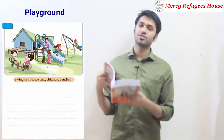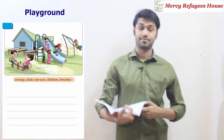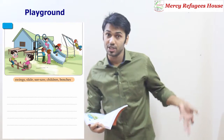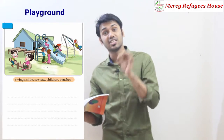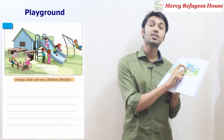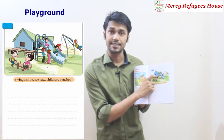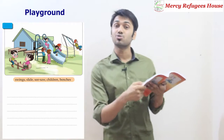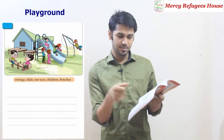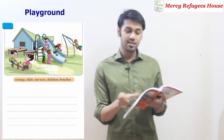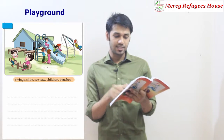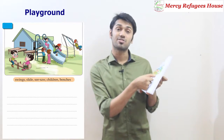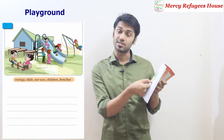First, read the paragraph, then explain it — make it as explanatory as possible. Once done, do the reading again and go to the next picture. Look at this picture — what can you see? We can see someone is swinging, someone is going up, and someone is on a slide. So there are different things we can see. Now look at the five words given: swings, slide, seesaw, children, benches — five words — and you write five sentences using these words.